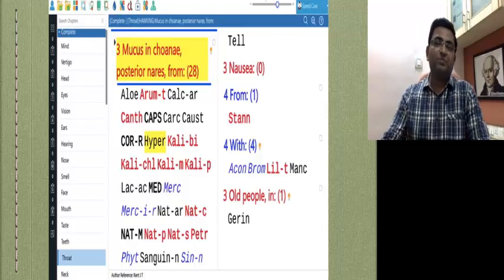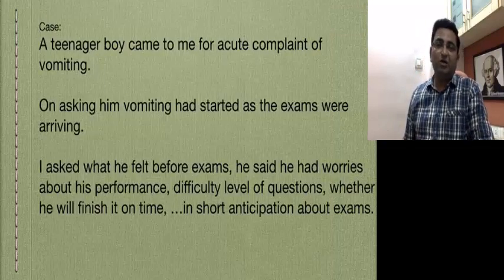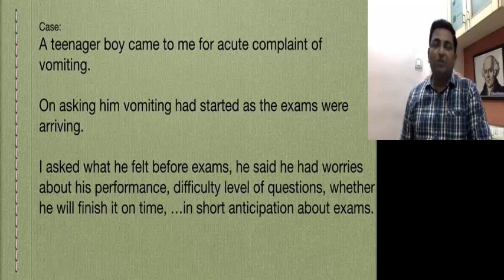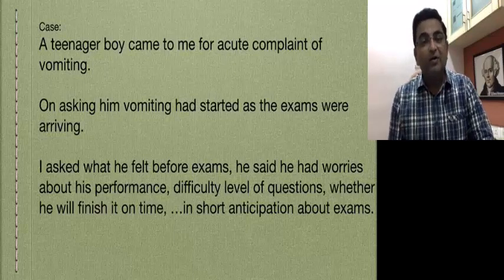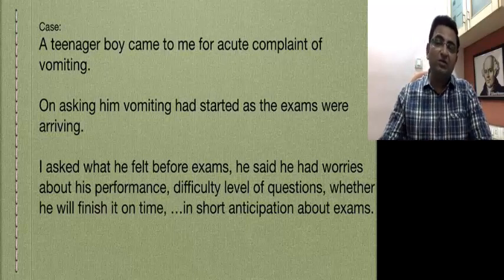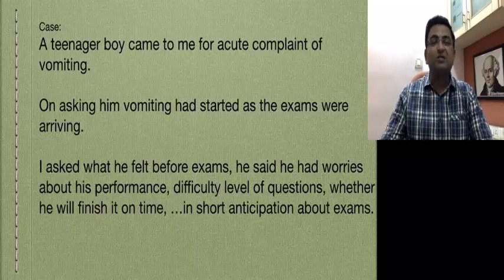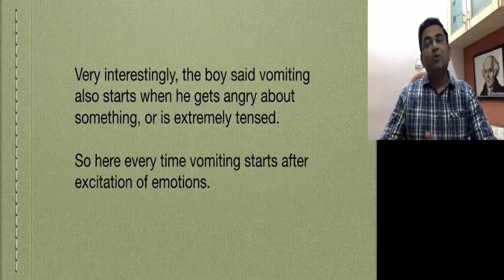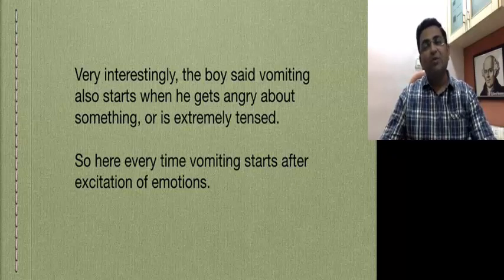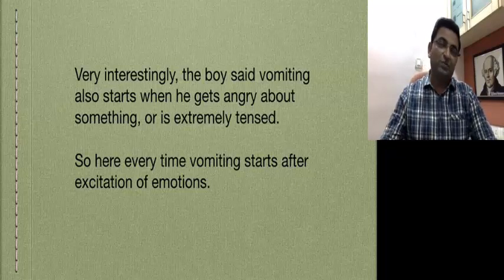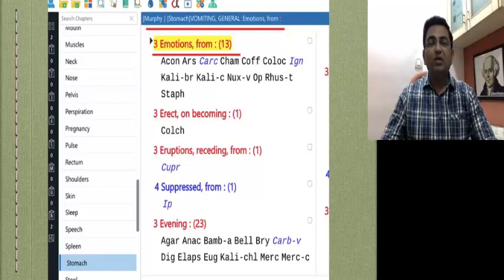Another case: a teenager boy came to me for acute complaint of vomiting. On asking, vomiting had started as the exams were arriving. I asked what he felt before exams. He said he had worries about his performance, difficulty level of questions, whether he would finish on time. In short, there is anticipation about exams. The boy said vomiting also starts when he gets angry about something or is extremely tense. So every time vomiting starts after excitation of emotions. We have a rubric in stomach: Vomiting from emotions.